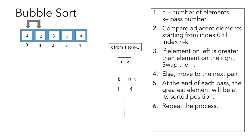We have to compare adjacent elements from index 0 to index 4. So let's start by comparing the first two elements. As the element on the left, which is 4, is greater than the element on the right, which is 2, we will swap them — 2 will now be at index 0 and 4 at index 1. Next we move to index 1 and index 2, and as 4 is smaller than 5, there would be no swapping.